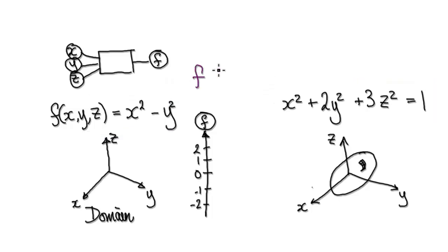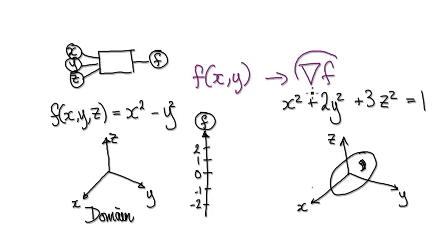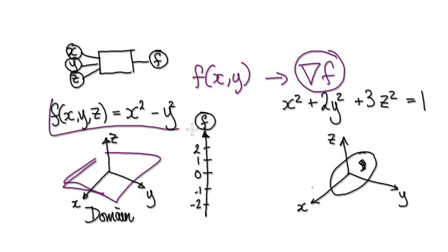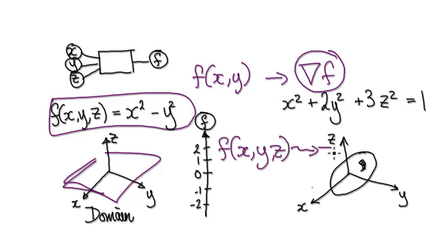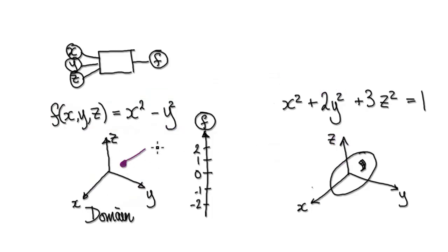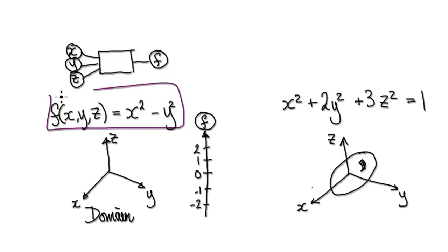If you're looking at a function of two variables, when you compute a gradient vector, you're going to get a vector that will be living on a 2D plane, on the XY plane. But if you're looking at a function of three variables, when you compute the gradient vector, you're going to get a vector that would be living in 3D space. The 3D space will represent your domain.